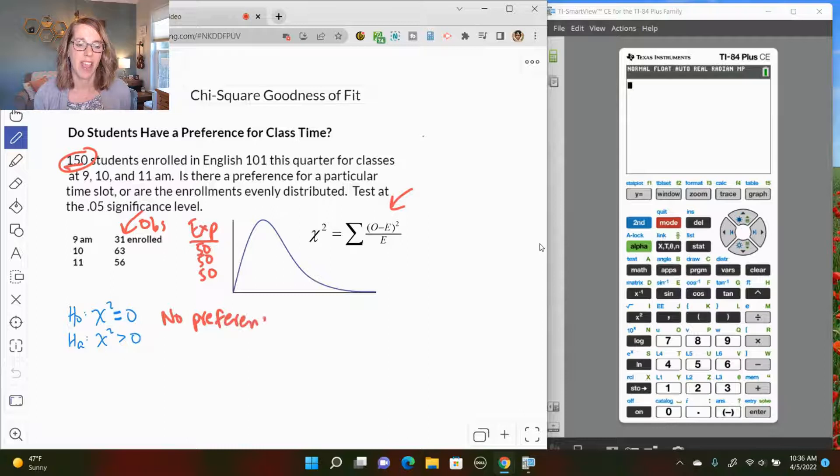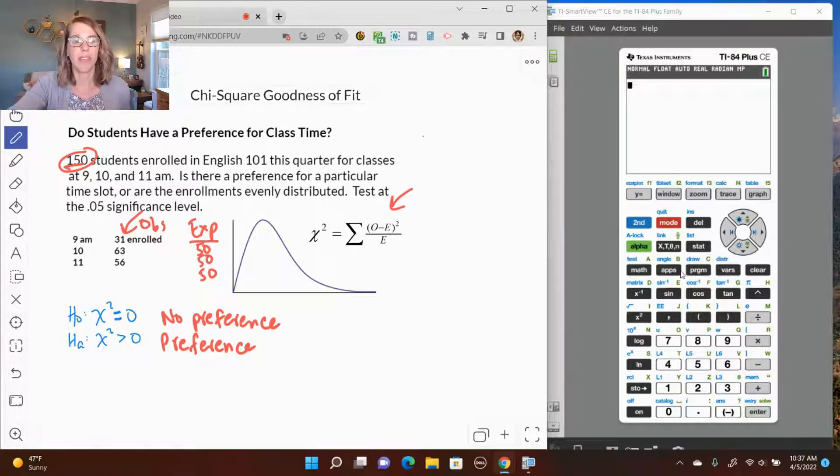And if that measure instead is significantly greater than zero, then we conclude that there is a preference. The calculator makes really quick work of this. Let's go ahead and put the data into our calculator.